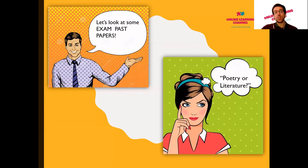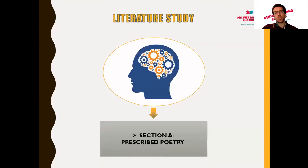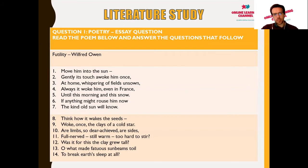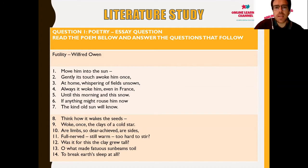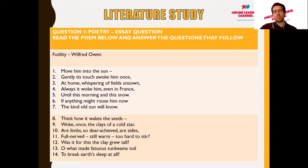For today's purposes we are going to look at a past exam paper, focusing on the aspects of poetry and literature. Section A, the poetry section — prescribed poetry — let's get straight into it. Question one is a poem on the prescribed list entitled 'Futility,' written by Wilfred Owen. With poems, each line is indicated by a number so you can make reference to any particular line when answering questions or doing your research.